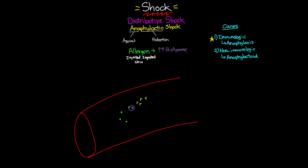After the first exposure and the creation of these antibodies, the antibodies will go and attach to our mast cells, which are our immune system mediators. This process is called being sensitized. In order for the reaction to progress to anaphylaxis or anaphylactic shock, we need another exposure to that same allergen.